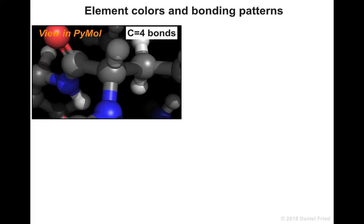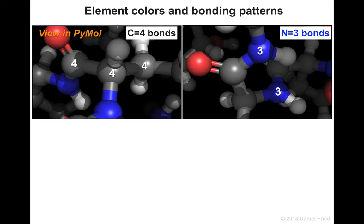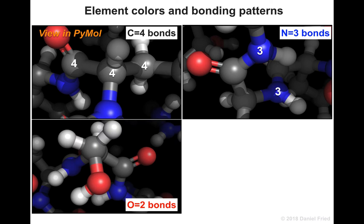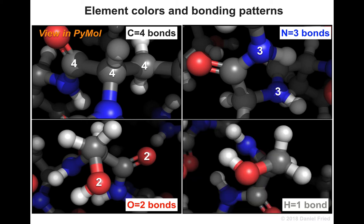Let's summarize the number of bonds we observed in the atoms of the hemoglobin structure. Carbons always make four bonds. Nitrogens make three bonds — they almost always make three bonds, we will see some exceptions, but for now learn that nitrogens make three bonds. In your model building, only use three out of the four holes for connections to other atoms. Oxygens had two bonds — we saw O-H as a common pattern and O double bond carbon as another common pattern. Don't use all four holes in the oxygen pieces in your kit, just use two for now.